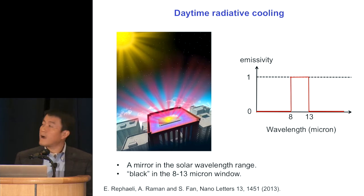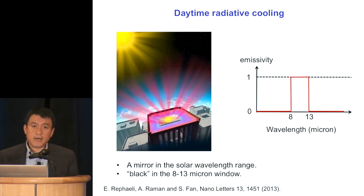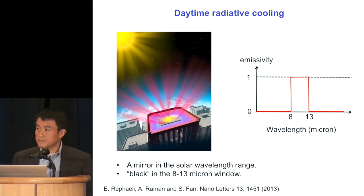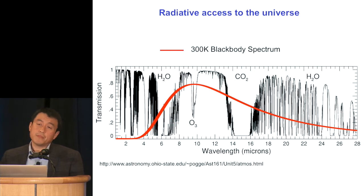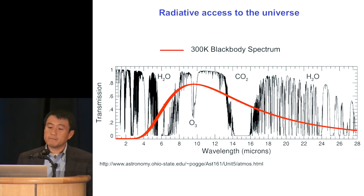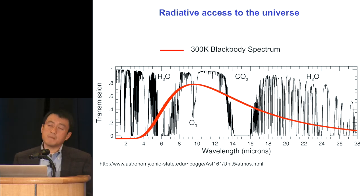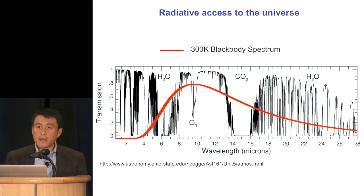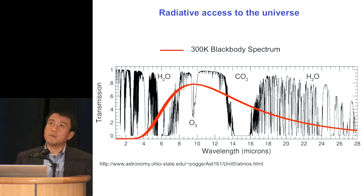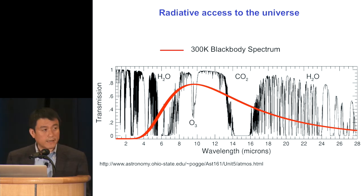You might wonder why you would care about this kind of profile. It turns out that if you build something like that and put it on top of a building, you can cool down the building itself. The argument is simple: the atmosphere is transparent in the 8 to 13 micron window. So any emitter strongly emitting in that wavelength range can radiate heat out into outer space, establishing thermal equilibrium with outer space, which being extremely cold provides a wonderful heat sink.